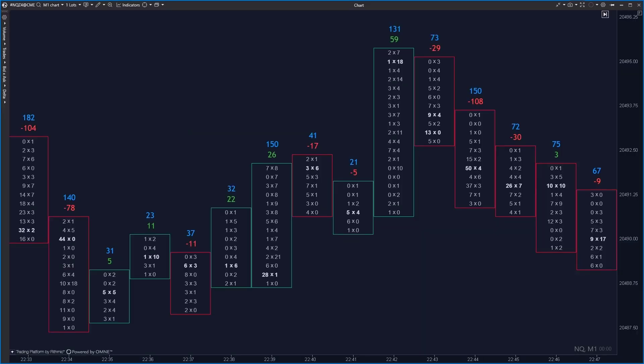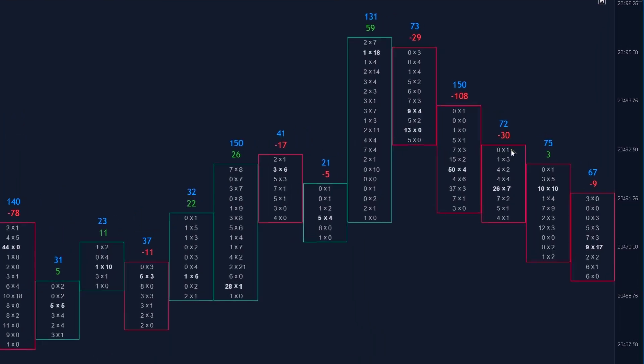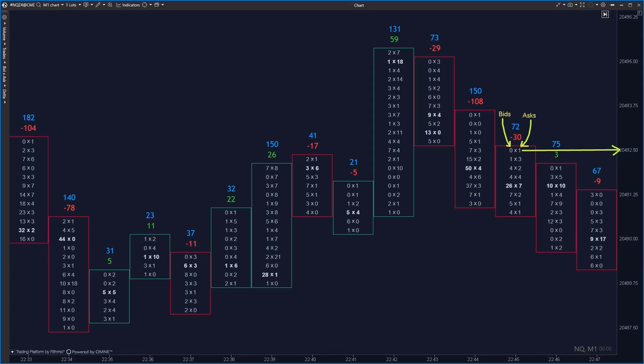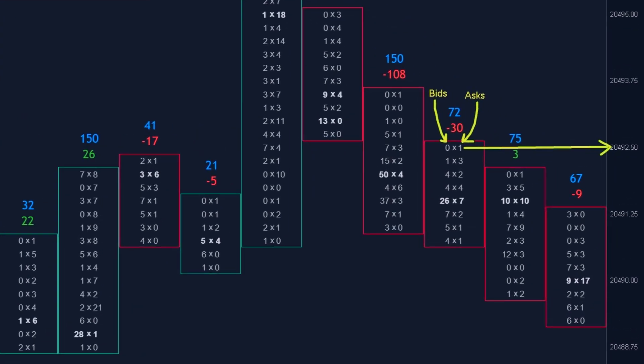A footprint is a candle where we have information about how many contracts have traded at each price level — on the bid side on the left and the ask side on the right. Footprint provides a detailed view of market activity by showing volume of trades executed at specific price levels in a given time frame. Unlike traditional candle charts which only show price movements, footprint charts reveal both buying and selling pressure. Each number shows how many contracts were traded on the bid and ask side at a given price level.